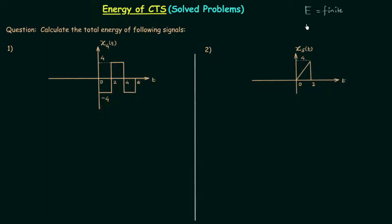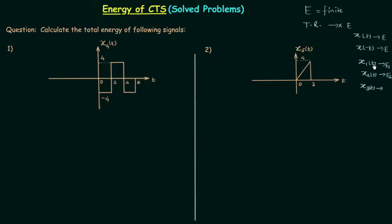The second conclusion was that time reversal has no effect on the total energy. So if you have a signal X(t) with energy E and you perform time reversal, the energy remains the same. The third conclusion was that the energy of two or more signals will be added when you add the signals. So if X1(t) has energy E1 and X2(t) has energy E2, then X3(t) = X1(t) + X2(t) has energy E3 = E1 + E2.